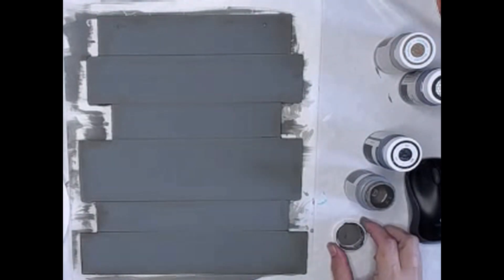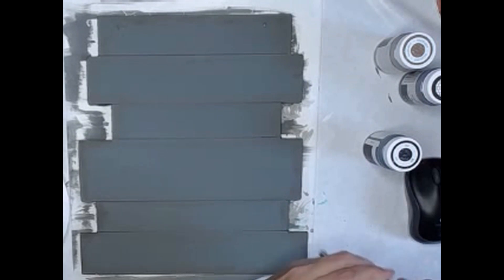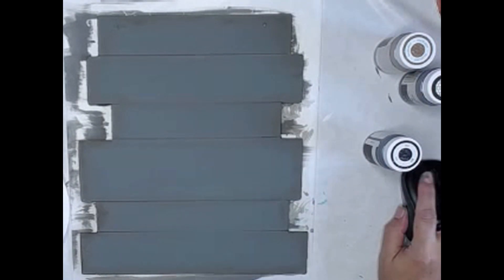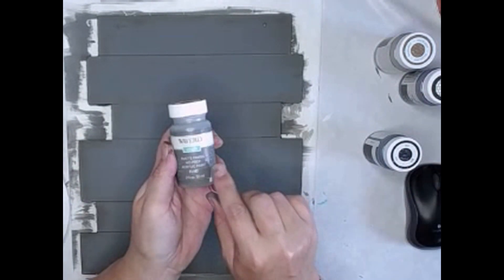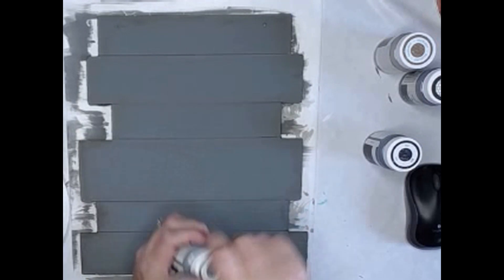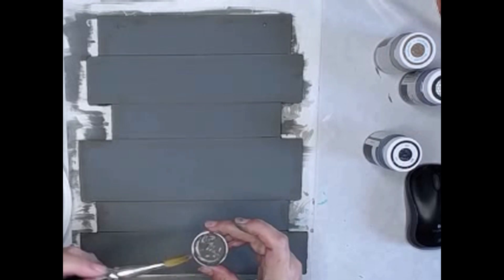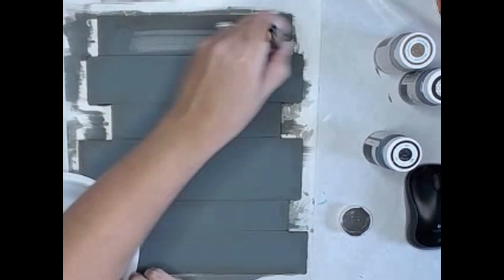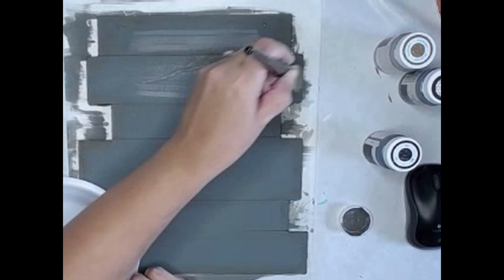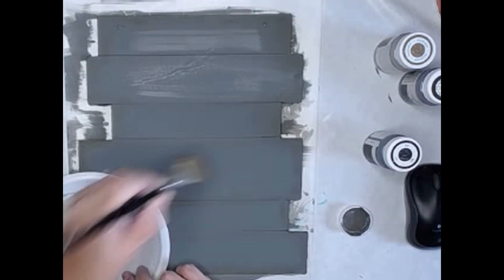Now I'm going to take my Waverly Chalk Paint in Elephant, and I'm going to dry brush over the entire piece, just giving it a layer of dimension, since this is a slightly different color gray than what's already on the board. I do want the layers, I do want it to look old and aged and weathered, and have some dimension to it.